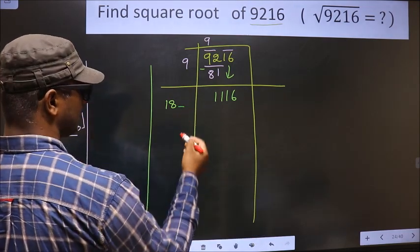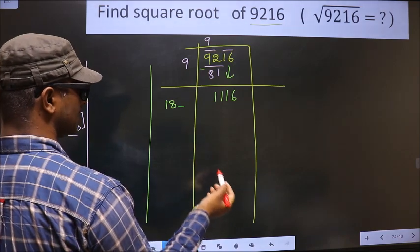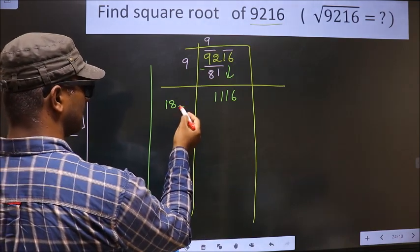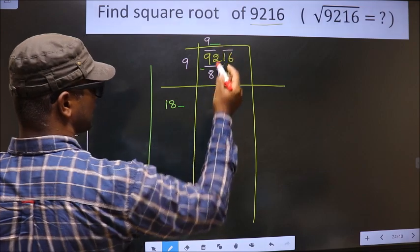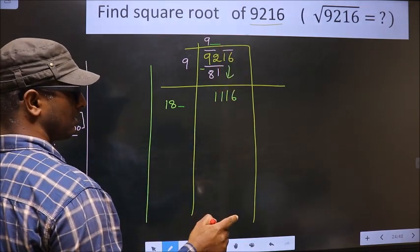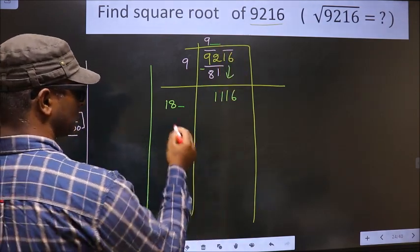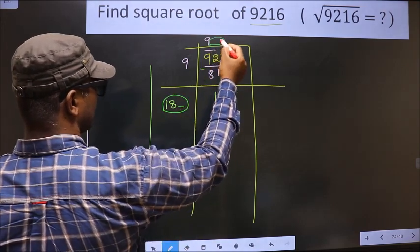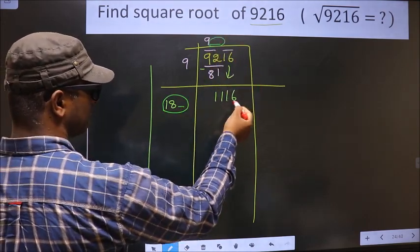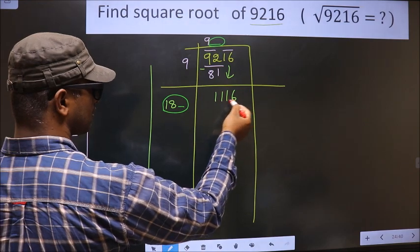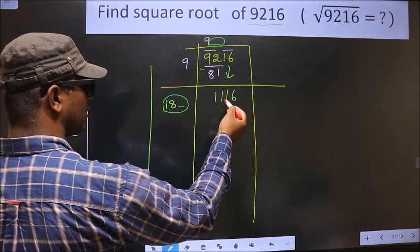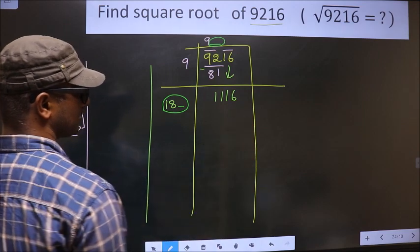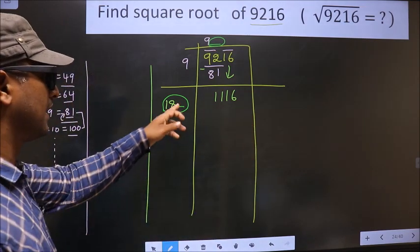Now here I should write a number. Condition is whatever number I write here, here also I should write the same number. And also, when I multiply this number with this number, I should get either equal to this or close to this number, but not exceeding this number. So let us find the number.